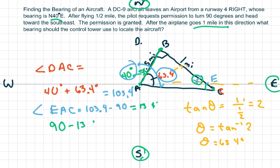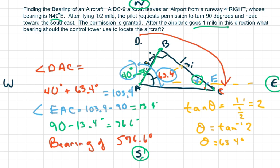Now 90 minus 13.4 degrees equals 76.6 degrees. So basically I'm going from north going clockwise, and I subtracted this out. So basically the control tower should use a bearing of S76.6°E—76.6 degrees east of south. This is your angle we found. We just had to find a lot of angles to get to this.